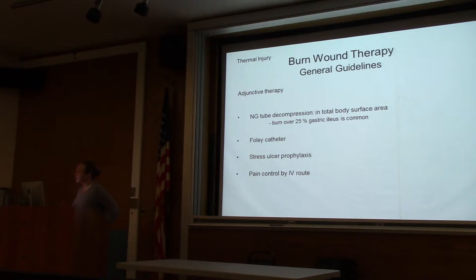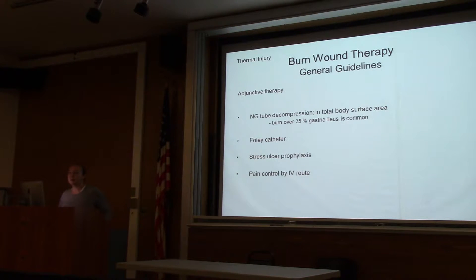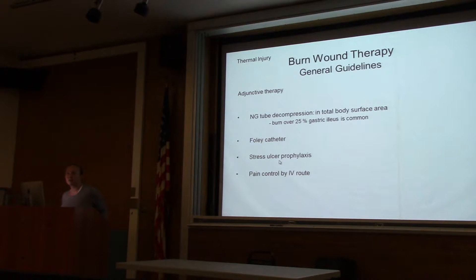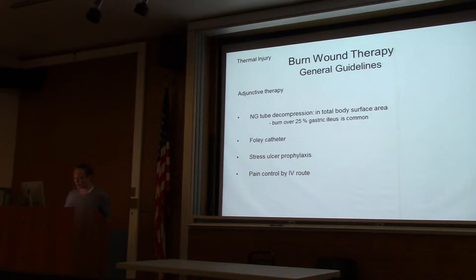Some general guidelines: patients are going to have pain and gastrointestinal issues — an NG tube is a good approach. Remember they develop high risk for ulcer from hypoperfusion of the gastric mucosa. Foley catheters are important to assess volume status. Stress ulcer prophylaxis with an H2 blocker or PPI is standard. Pain control should be given IV; subcutaneous pain medication will not be adequately absorbed.